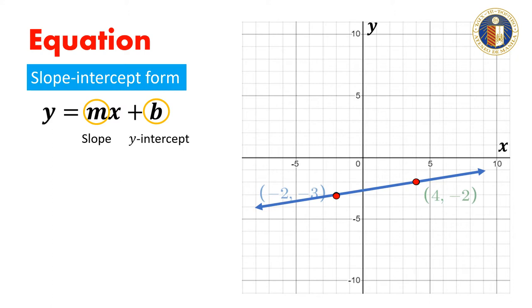Since we were given the two points on the line, we can use the formula m equals y sub 2 minus y sub 1 all over x sub 2 minus x sub 1 to find the slope.